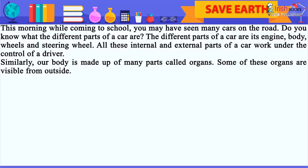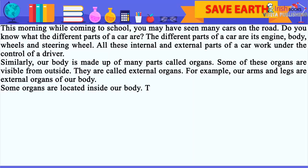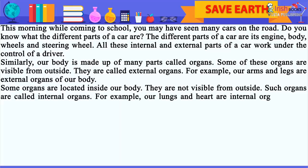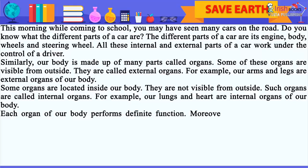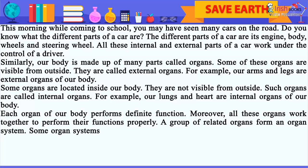Some of these organs are visible from outside. They are called external organs. For example, our arms and legs are external organs of our body. Some organs are located inside our body and are not visible from outside. Such organs are called internal organs. For example, our lungs and heart are internal organs of our body. Each organ of our body performs a definite function, and all these organs work together to perform their functions properly.